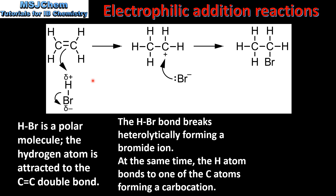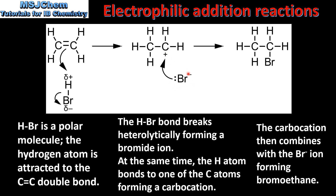Next, the hydrogen to bromine bond breaks heterolytically, forming a bromide ion. At the same time, the hydrogen atom bonds to one of the carbon atoms, forming a carbocation. Next, the bromide ion uses its lone pair of electrons to form a bond with this carbon atom. And finally we have our product, which is bromoethane.